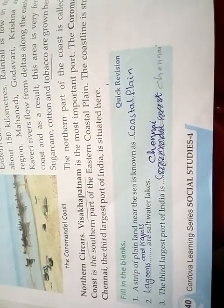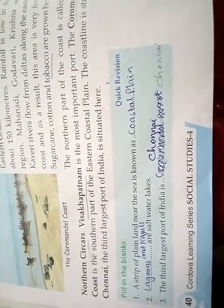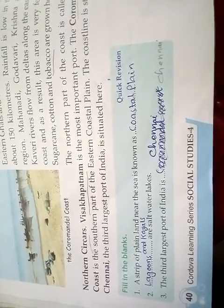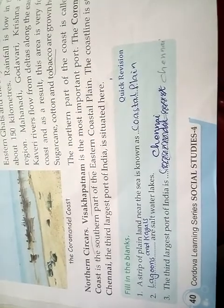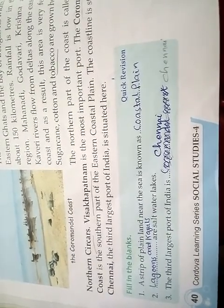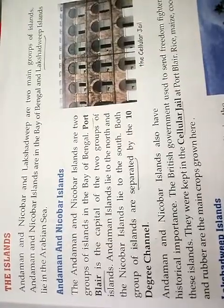Filling the blanks. First, a strip of plain land near the sea is known as a coastal plain. Second, lagoons and kayals are salt water lakes. Third, the third largest port of India is Chennai.